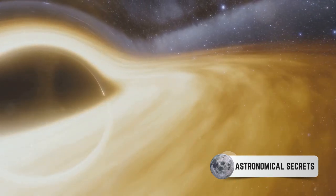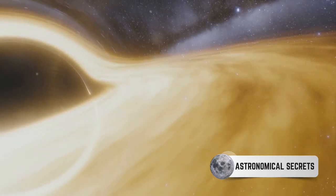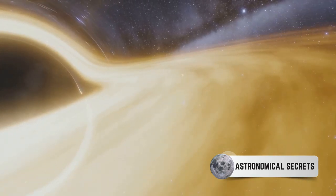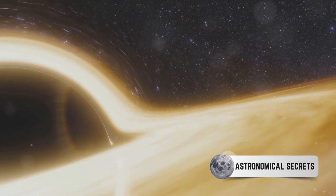The bright ring seen in the image is the accretion disk, heated to billions of degrees as it spirals into the black hole. This image, the first of its kind, marked a significant milestone in our exploration of these celestial phenomena.